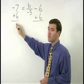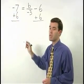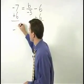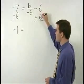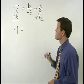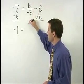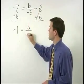On the left, negative 7 plus 6 simplifies to negative 1. On the right, our negative 6 plus 6 cancels and we're left with B over negative 3.